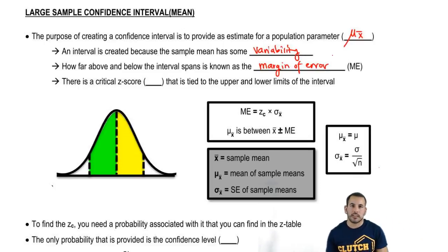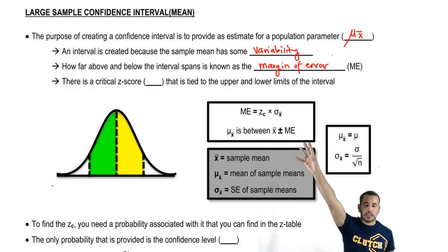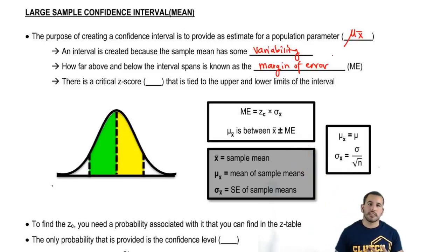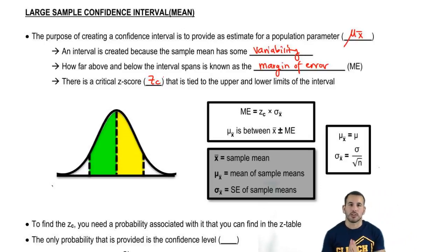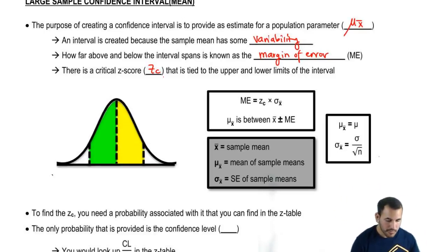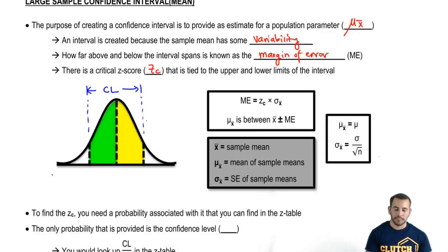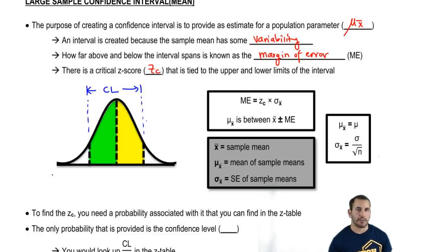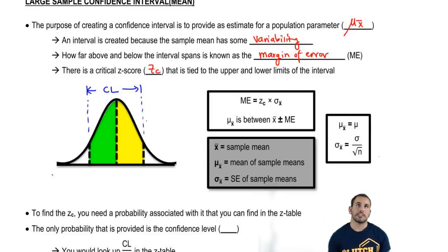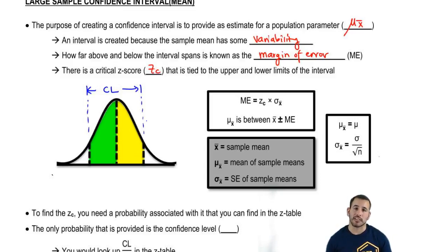The margin of error is basically how accurate we can be. Here we have the equation for the margin of error — it's a critical Z. These critical Z values are tied to the upper and lower limits of the interval. The confidence level is the probability or the area within the interval. You could be 90% confident, 95% confident, whatever the case may be. The more confident you are, however, the wider the interval gets, because you can't have your cake and eat it too. If you want to be more confident, you'll be more confident but less accurate, or you can be less confident and more accurate.